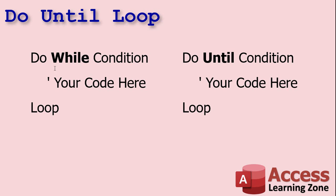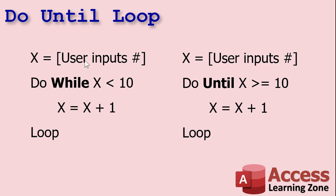They're set up the same. Do while this condition exists, loop — and this one is do until some condition exists, then loop. With a while loop, the user enters in some number, say five, and while that number is less than 10 we add one to it, and eventually it equals 10 and drops out. Now over here it's the same exact loop just written differently. The user enters a five — do until X is greater than or equal to 10. Make sure you get the greater than or equals over here if this is less than. It's going to loop until X is greater than or equal to 10, and when it hits 10 it drops out. Same exact logic, just written differently.